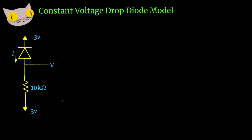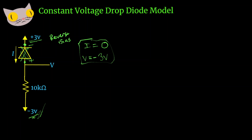For this last one, we can see we have a reverse bias circuit — the negative cathode is hooked up to the positive lead and the positive anode is connected to the negative lead. So we can treat this circuit as an open circuit, and we know that our current is simply 0. Since there's no current through the path, our voltage is going to be negative 3 volts. So there we went over four simple examples on how to use the constant voltage drop diode model. Thanks for watching.